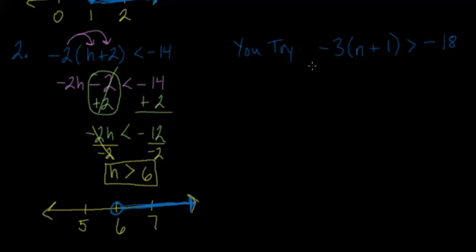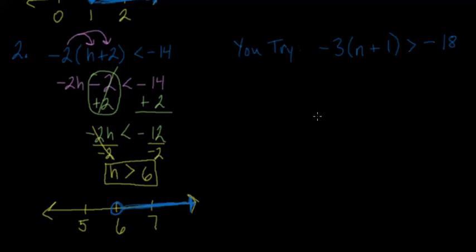Now you try solving this inequality: negative three times the quantity n plus one is greater than negative 18. Pause it, do the steps, and see if you get the right answer. Did you get n is less than five with this graph? If so, you're ready to move on. If not, pause and try working it out again.